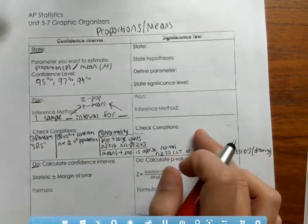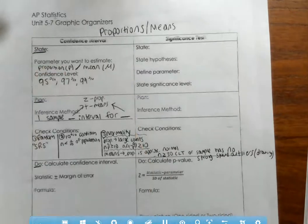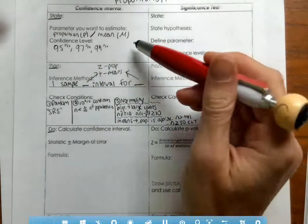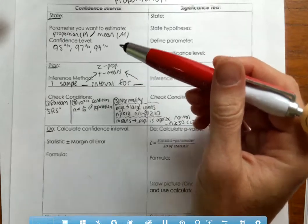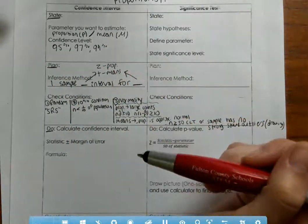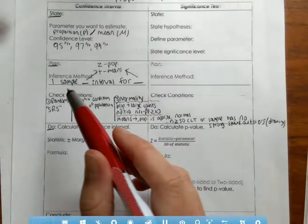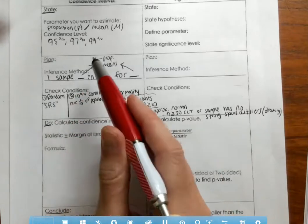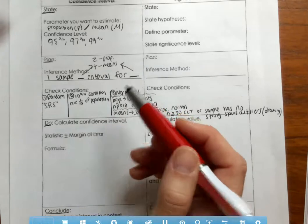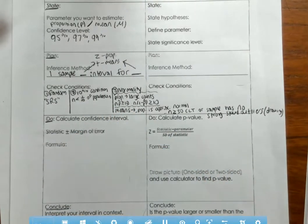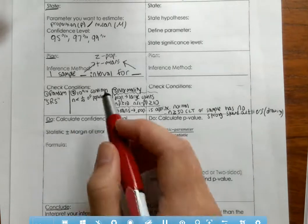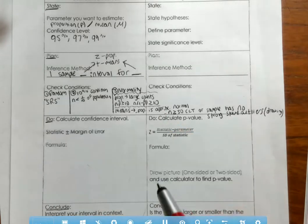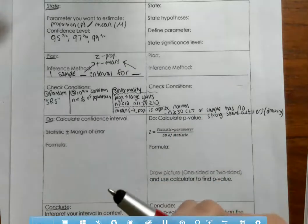Those are your three conditions. The significance test box will be the same. Just to recap: the random condition so we can generalize to a population; the 10% condition so we can assume independence; and the normality condition so we can say our distribution is normal and use Z-tables and T-tables to find our probability.